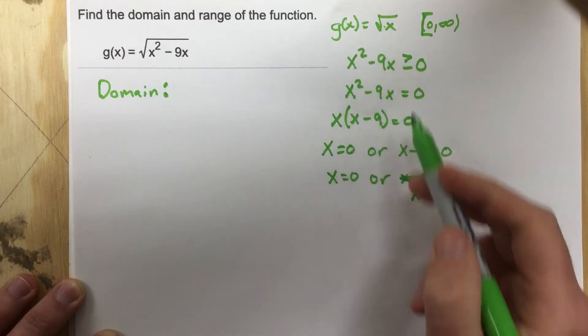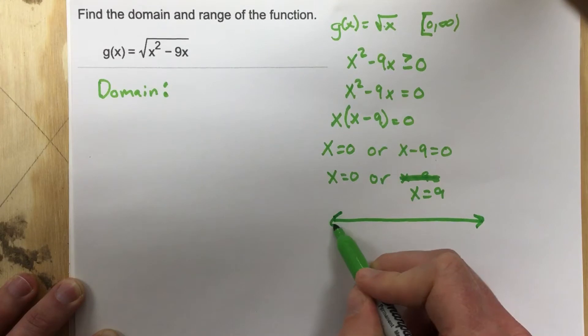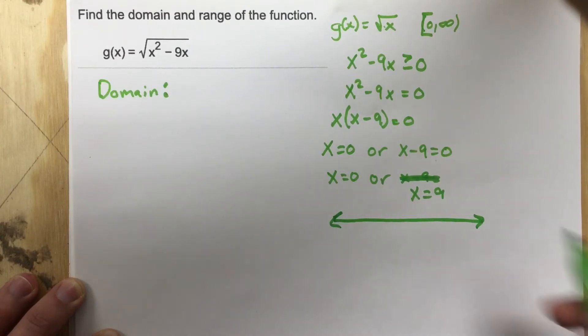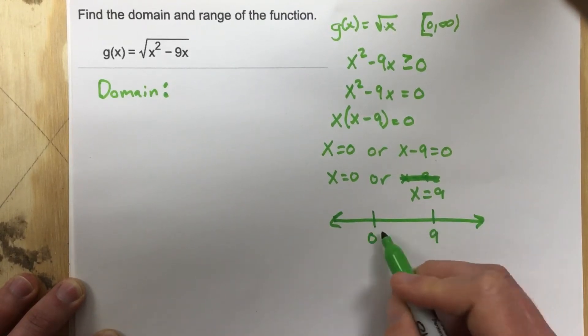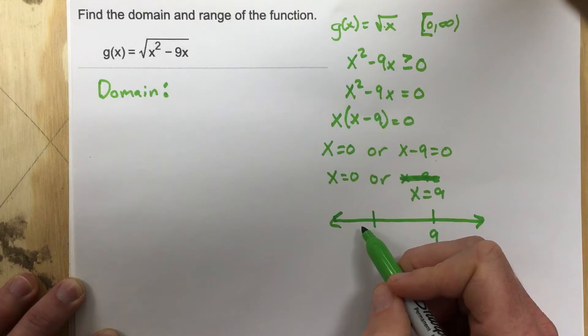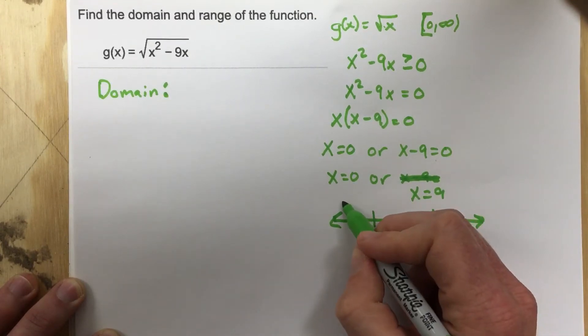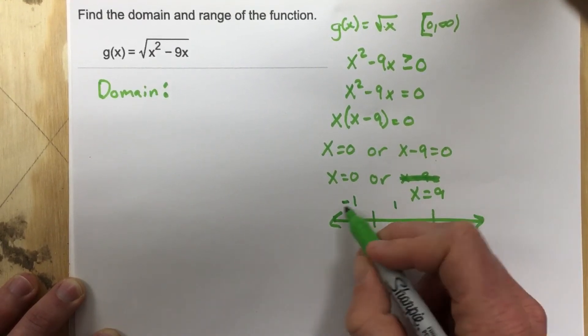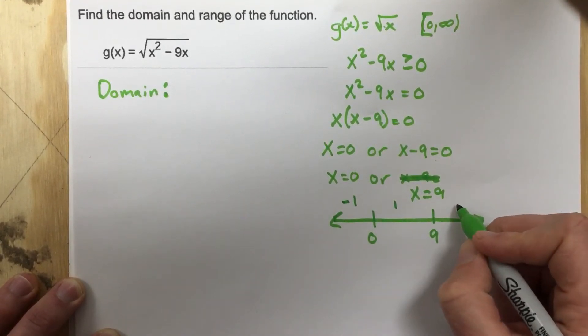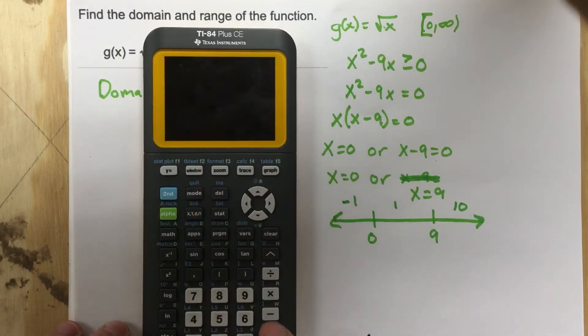Now to solve a polynomial inequality, I draw a number line. And at this point I mark 0 and 9 on the number line. And I'm gonna pick points in between 0 and 9 and outside of 0 and 9. And I'm gonna look for the solution sets. Let's check negative 1. Let's check 1 because 1 is between 0 and 9. Negative 1 is less than 0. And let's pick 10. And I'm gonna use my calculator to check these for me.